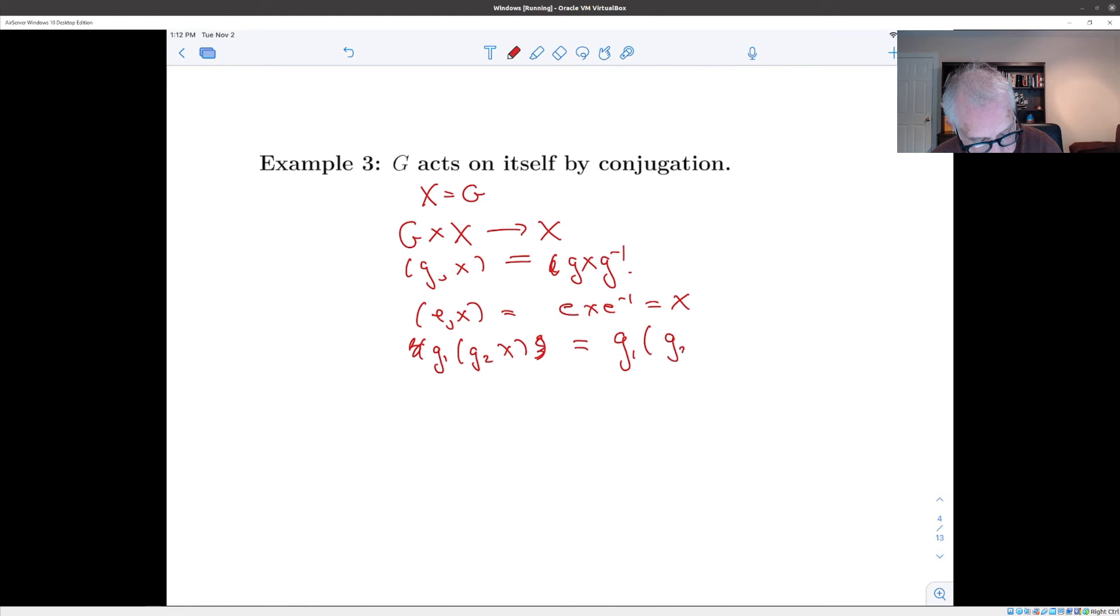And g_1 applied to (g_2 x), got a lot of parentheses there, is g_1 applied to g_2 x g_2^{-1}, which equals g_1 g_2 x g_2^{-1} g_1^{-1}. And that's the same as g_1 g_2 x (g_1 g_2)^{-1}, which is (g_1 g_2) applied to x. So the conjugation action is an action. And we've looked quite a bit at the conjugation action.